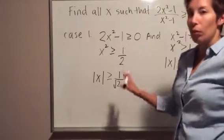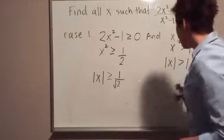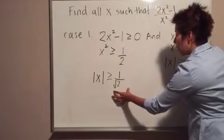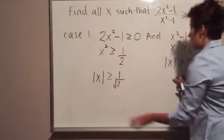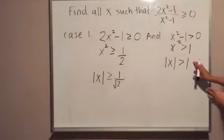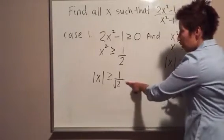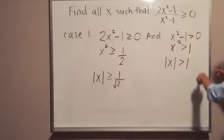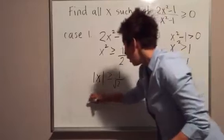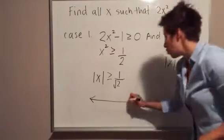If you need to review absolute values, there's another video you can look at for more detail about why x² ≥ 1/2 becomes |x| ≥ 1/√2, and why x² > 1 becomes |x| > 1. Starting from here, we need both of these conditions to be true simultaneously for Case 1. I'll draw a number line to help display what it looks like for both to be true.